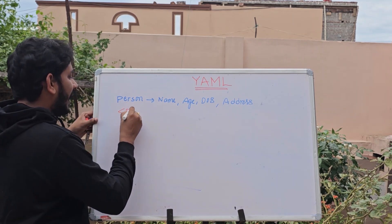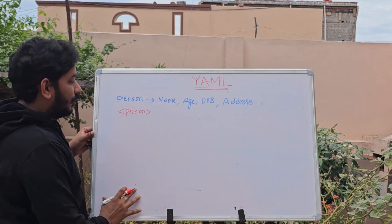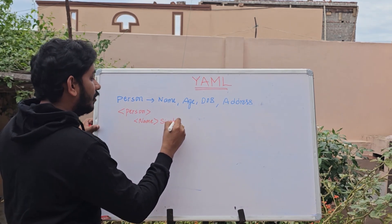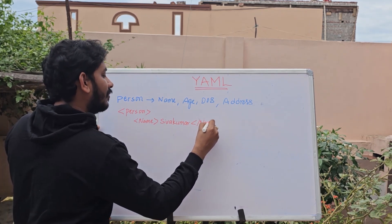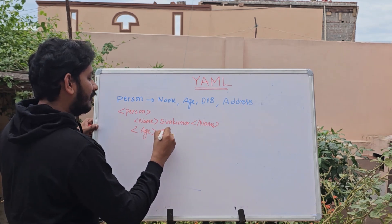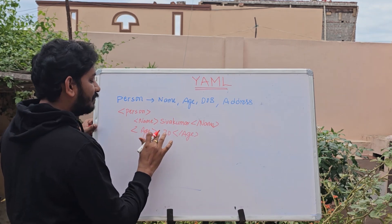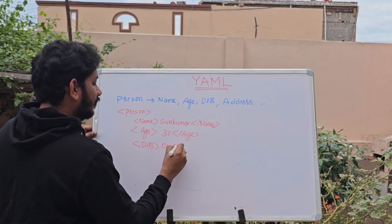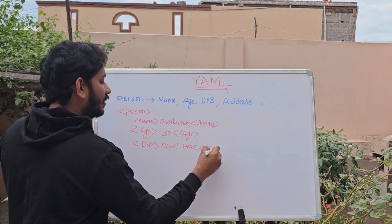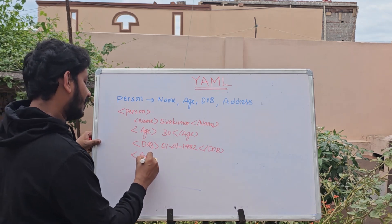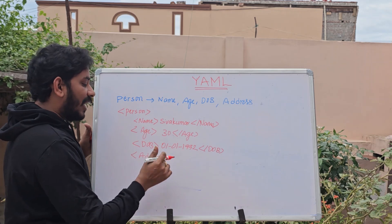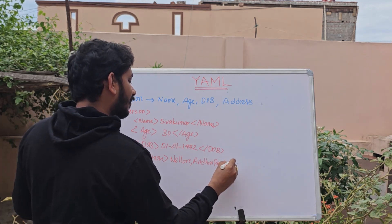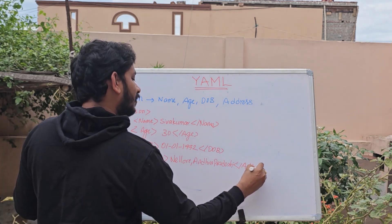When you have a person, you will start: name in the tags, the value Sriva Kumar, then age — 30, date of birth for example 01/01/1992, then address. So this is very important — this is the first value of the tags. For example: Nellu, Andhra Pradesh. This is the address.